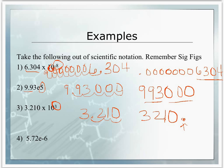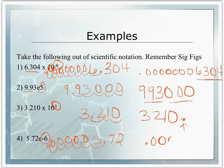Finally, we have an E format with a negative 6. We take 5.72 and move our decimal to the left 1, 2, 3, 4, 5, 6 places, filling in zeros. Our number is 0.00000572. Again, 3 sig figs in the scientific notation form, and 3 here. You need to make sure to keep your sig figs consistent from the scientific notation form to the expanded form.